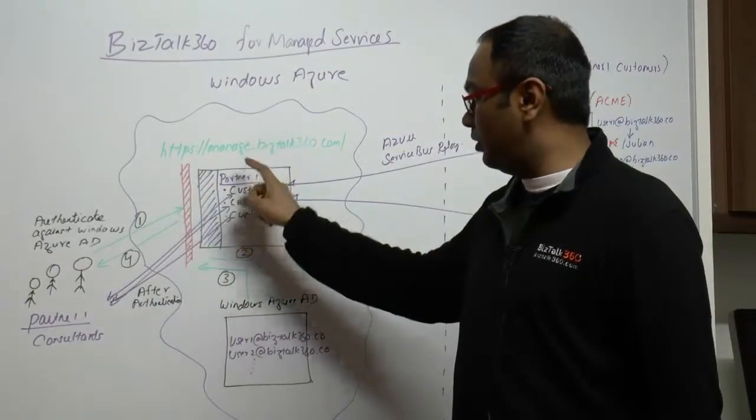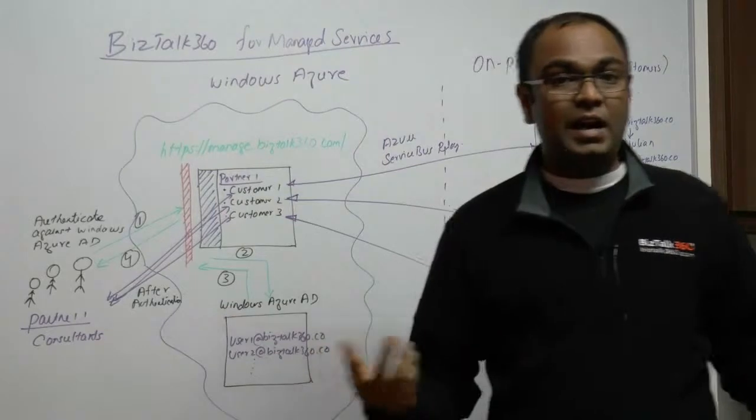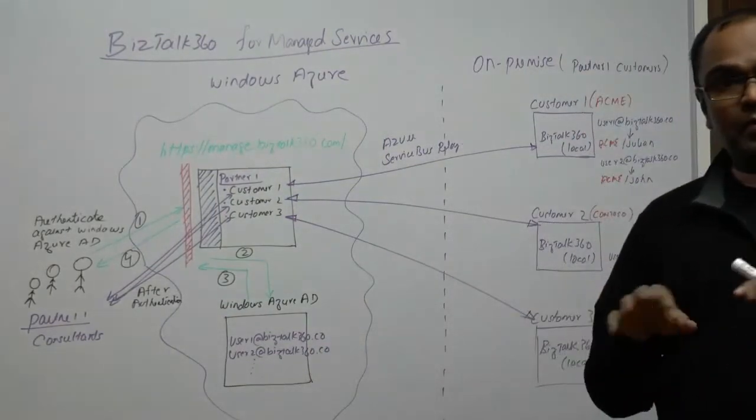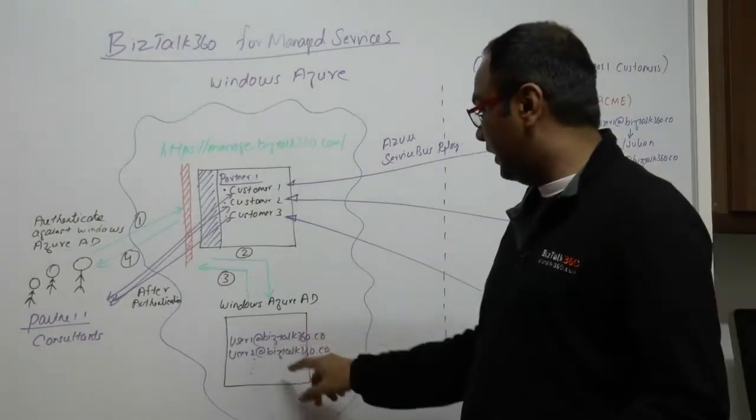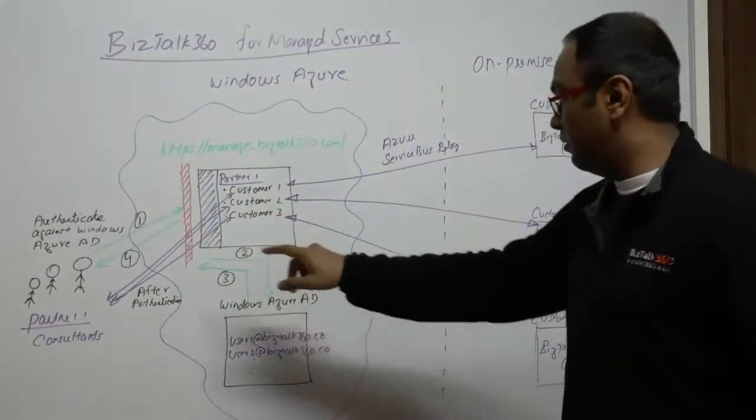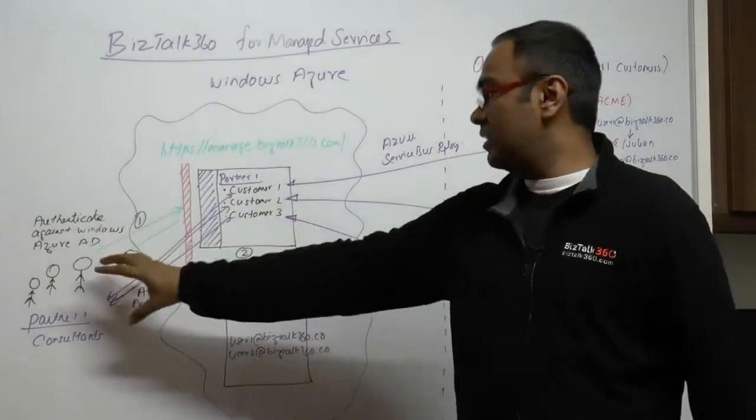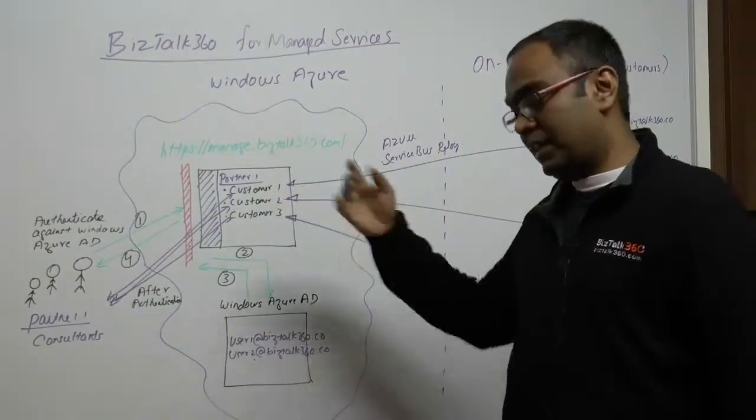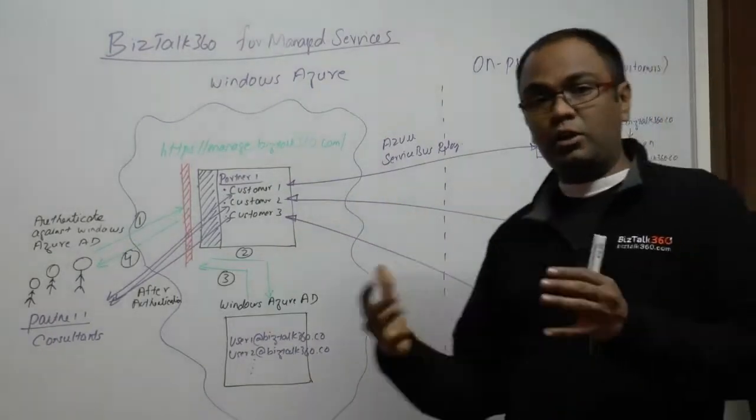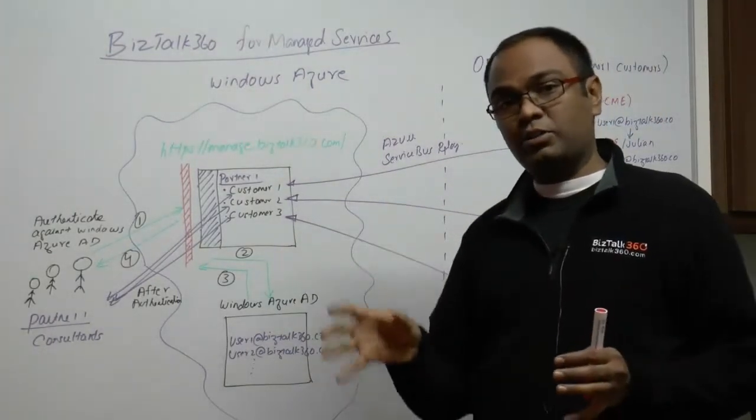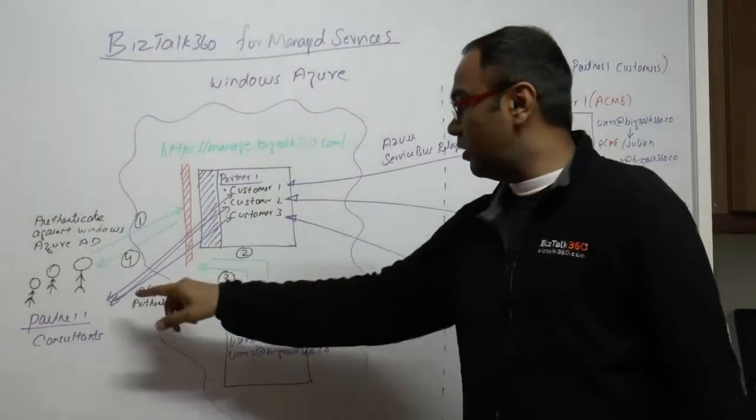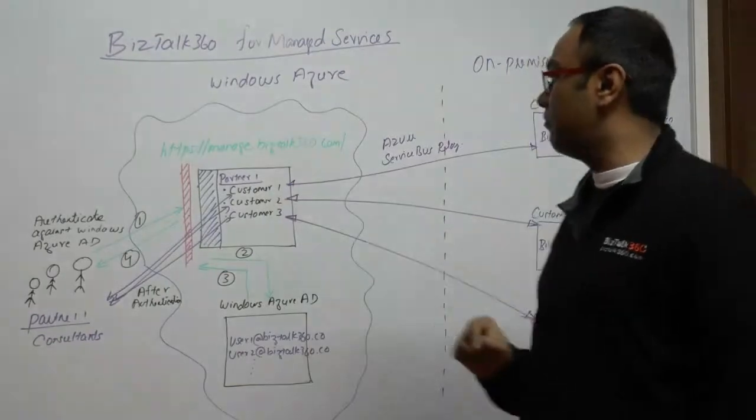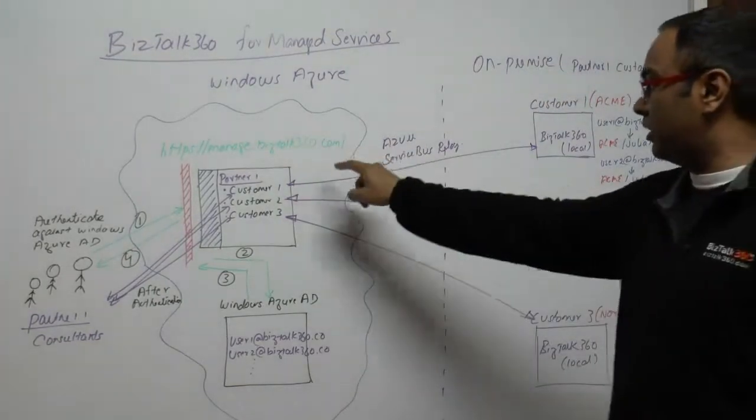You just fill in your details and once it's authenticated, the consultants will have access to a bunch of customer sites. That's again controllable—you can control which consultant will have access to which customer and what. Once that's done, the consultant will simply click on customer one from the managed.ms360.com portal and they will be routed directly to the on-premise customer site.